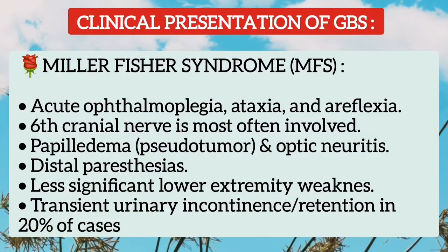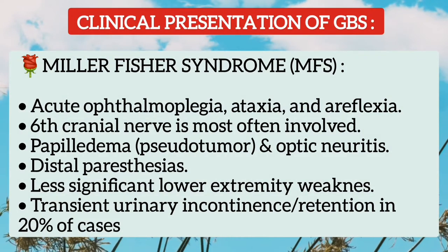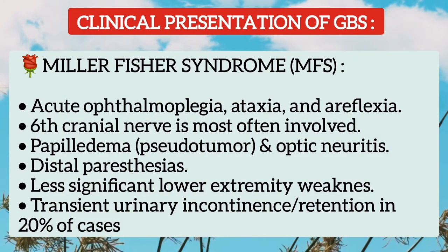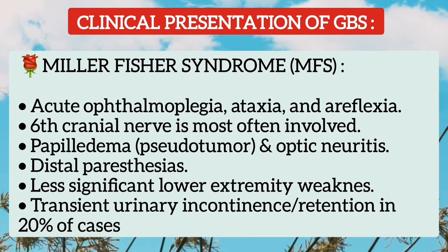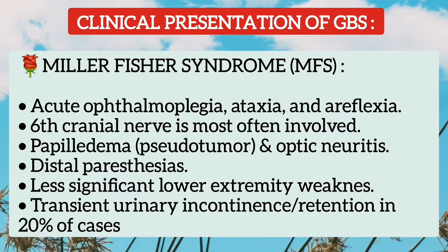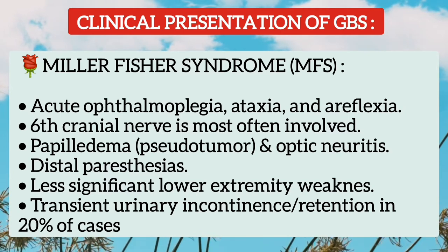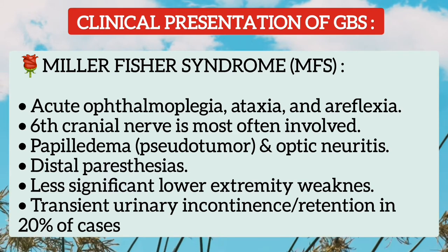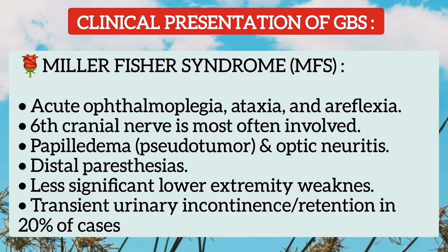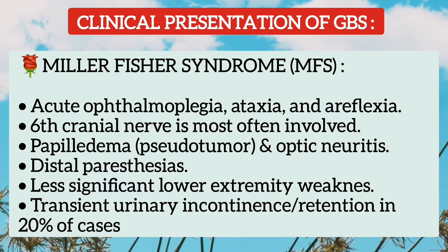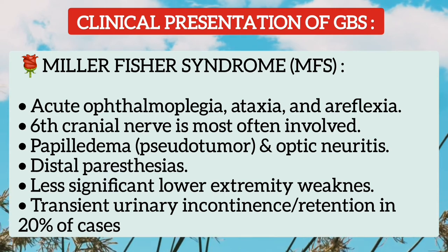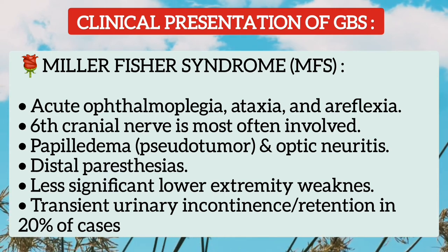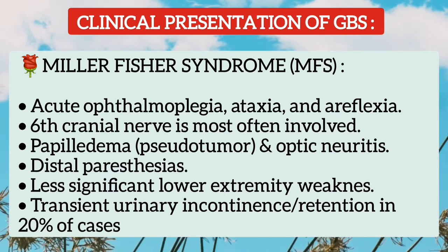In Miller-Fisher syndrome, there is acute ophthalmoplegia, ataxia, and areflexia. The sixth cranial nerve is most often involved. There is also papilledema, optic neuritis, and distal paresthesia. However, lower extremity weakness is less significant. There may be transient urinary incontinence or retention in 20% of cases.